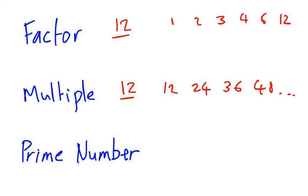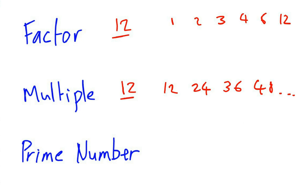And then finally the prime number. A prime number is any number that has exactly two different factors. So for example 2 is the first prime number because it has factors of 1 and 2 — exactly two different factors. A common mistake is thinking that 1 is a prime number. 1 is not a prime number because we can only get 1 by multiplying 1 times 1, and those two factors are not different.